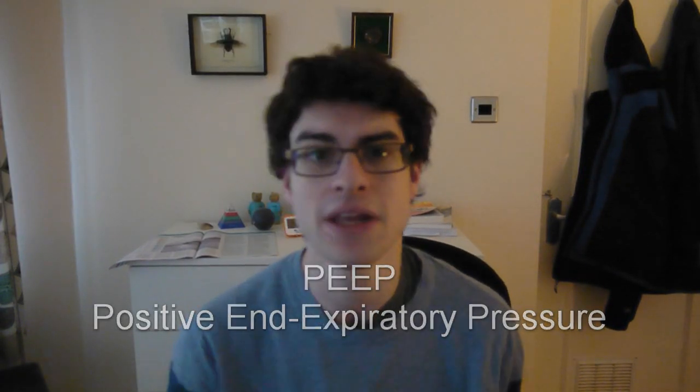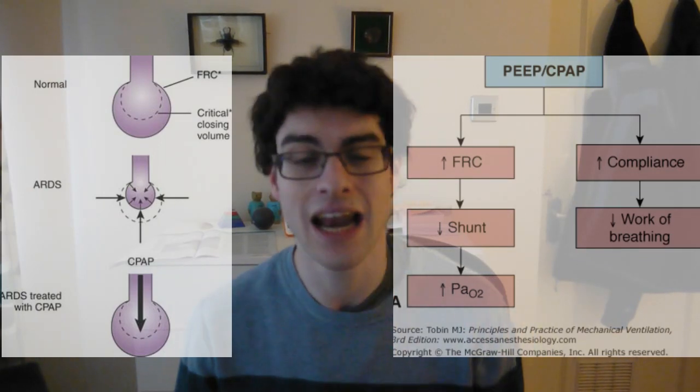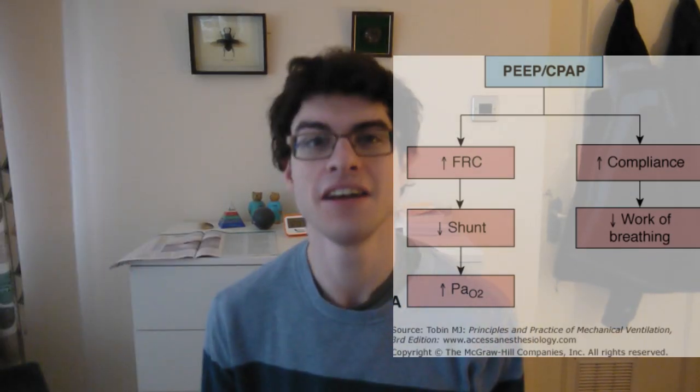CPAP generally refers to the device for creating PEEP — positive end-expiratory pressure. Normally we create this for ourselves by breathing against the partially closed glottis. When our airways are collapsing and we're not able to do that, then CPAP is a very good way to artificially increase the functional residual capacity by splinting open these collapsed alveoli. It's basically the equivalent of sticking your head out of a car window — you just have this constant flow of air into your lungs.